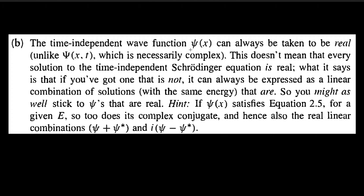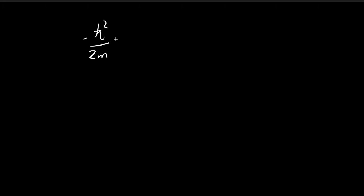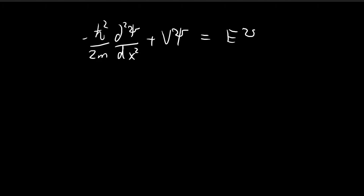In this problem, we're going to prove that ξ(x) can always be taken to be real — there will be no imaginary component. We can do that by first considering the time-independent Schrödinger equation. For a time-independent Schrödinger equation at energy level E, we have the solution ξ(x).